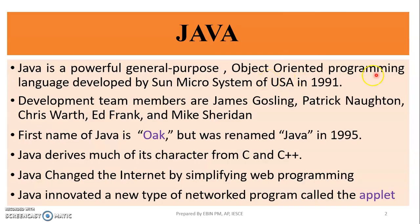Java is an object-oriented programming language developed by Sun Microsystems in 1991. It is a general purpose, powerful language. The original name of Java was OYAC, and it was renamed Java in 1995.